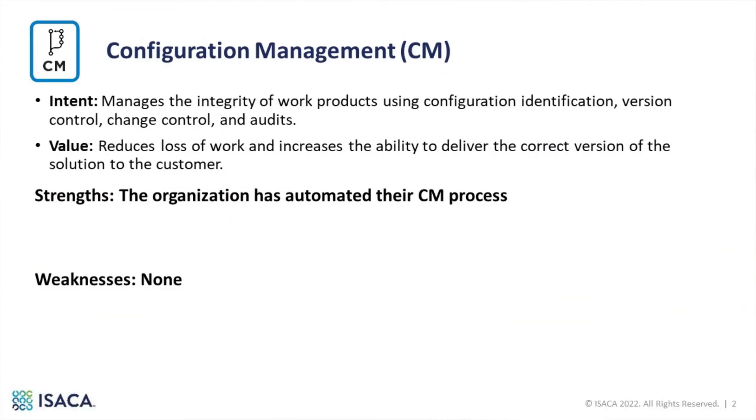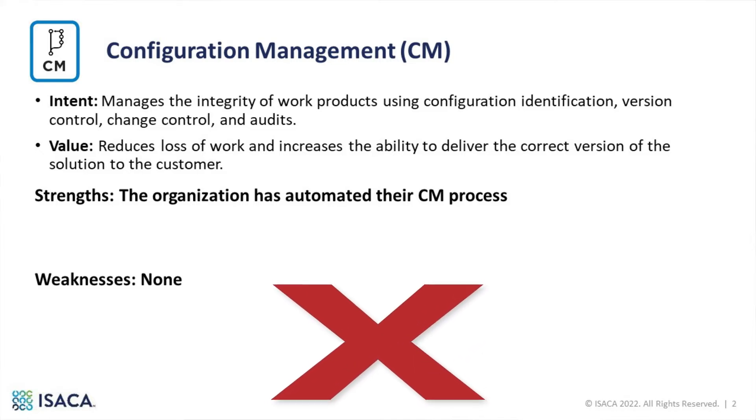Strength: The organization has automated their CM process. The CMMI model identifies what needs to be done but not how. Simply automating a process isn't a strength — that could mean automating a bad process.